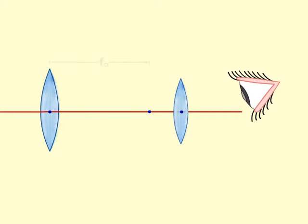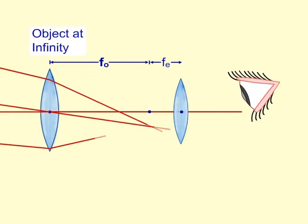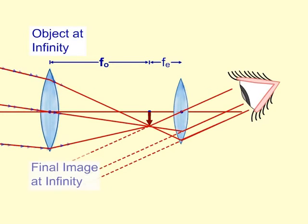The course of rays of light in normal adjustment of the telescope is like this. A parallel beam of light from an astronomical object, which is at infinity, is made to fall on the objective lens of the telescope.